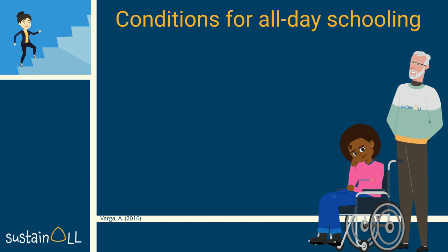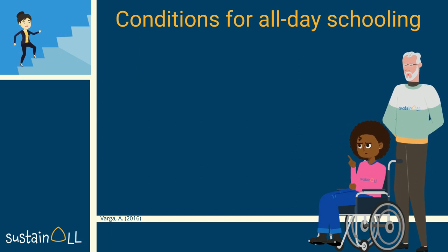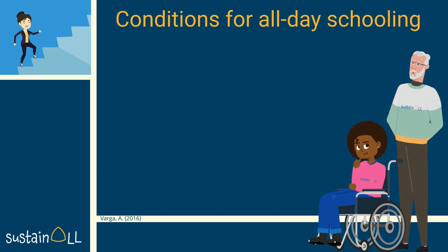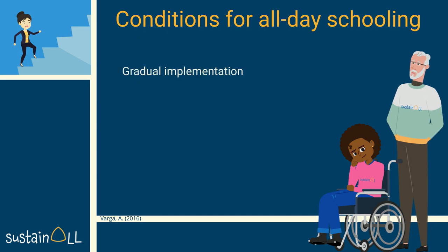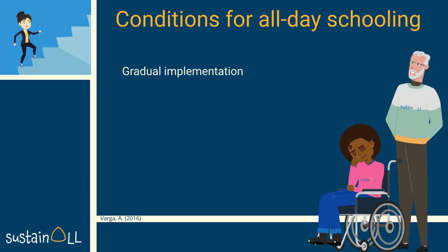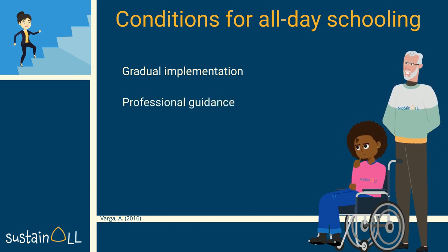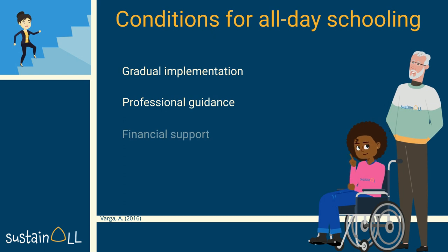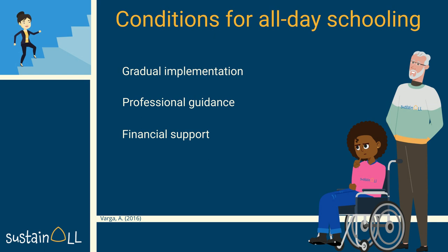International research findings name conditions for schools to adopt an all-day schooling approach. One of those conditions is that this process is implemented gradually, preventing school actors from seeing this approach as a new system forced upon them. Another condition is giving school staff professional guidance to adapt to this system. Finally, financial support is a mandatory condition, as this approach implies additional resources.